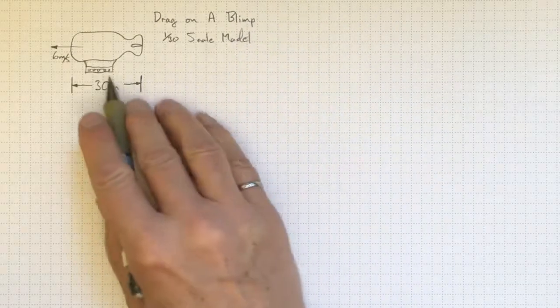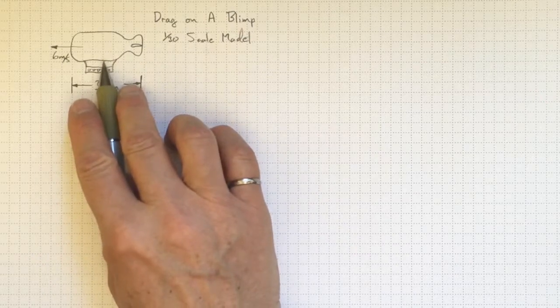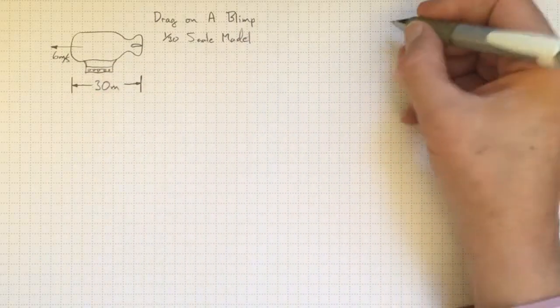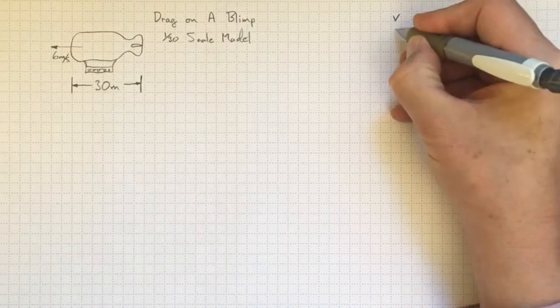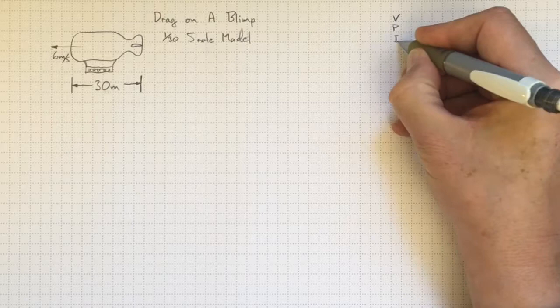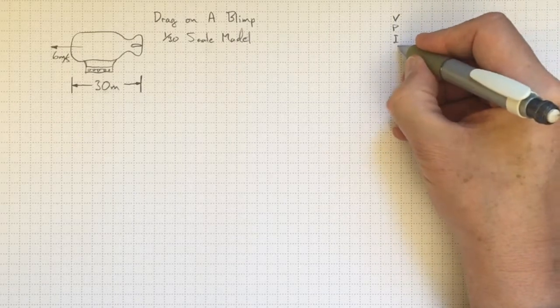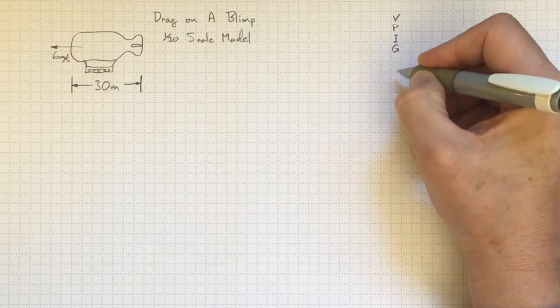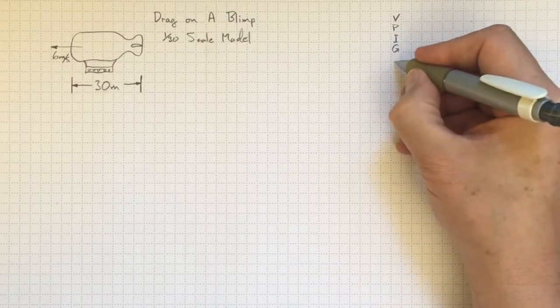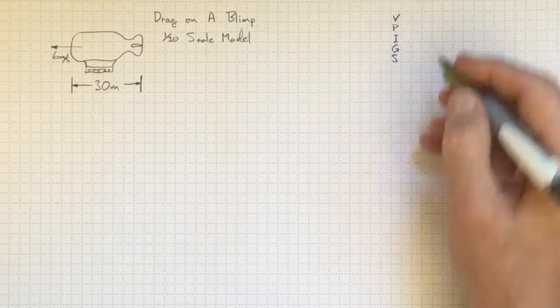Now, we know that when we look at this large blimp, we're going to have to take into account a variety of forces. There might be viscous forces. There might be pressure forces. There might be inertial forces to take into account how much we're accelerating or decelerating the flow. Certainly, there'll be gravity because the blimp is being held up against gravity. And there might be surface tension forces. So let's go through them one by one.